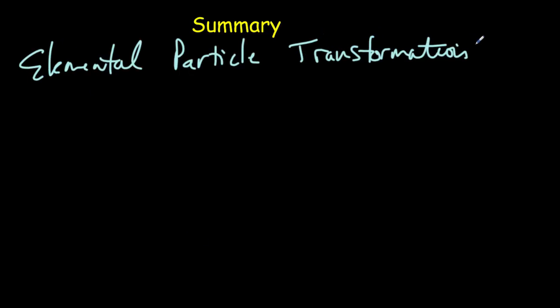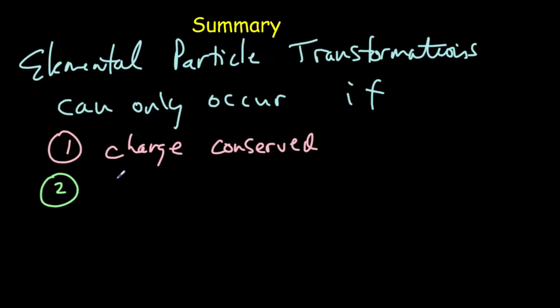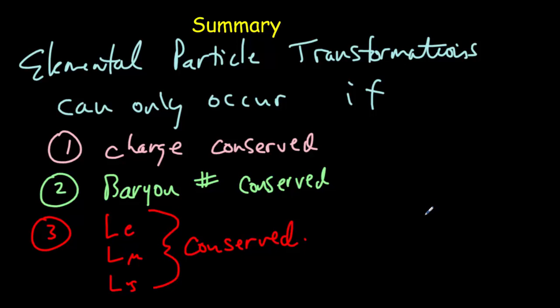So let's summarize. Elemental particle transformations can only occur if one, charge is conserved, two, baryon number conserved, and three, if the three lepton numbers are conserved. And this is going to allow you to tell whether or not a reaction is possible, and also to predict the nature of particles that will show up in these transformations.